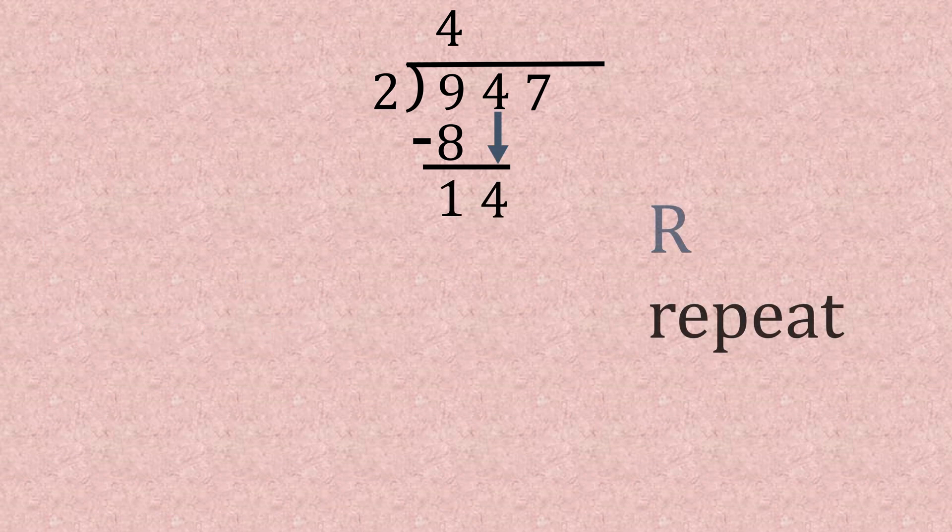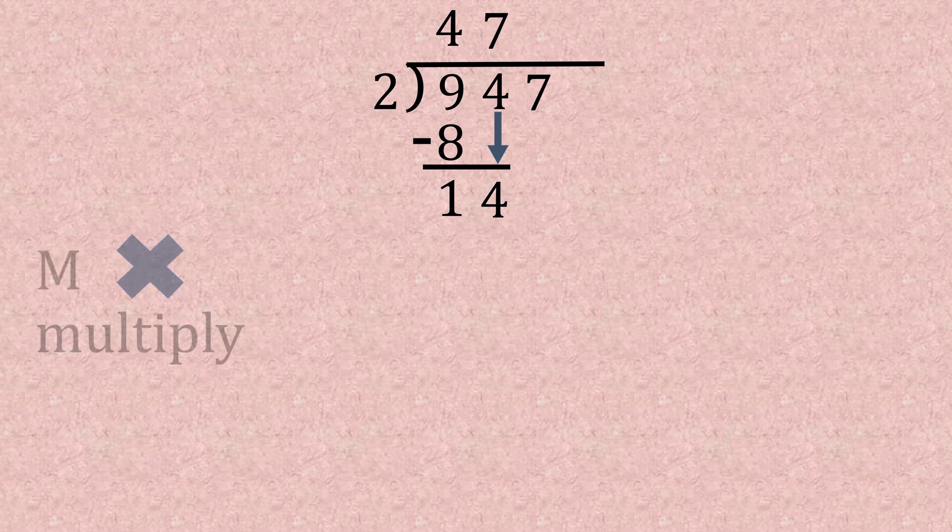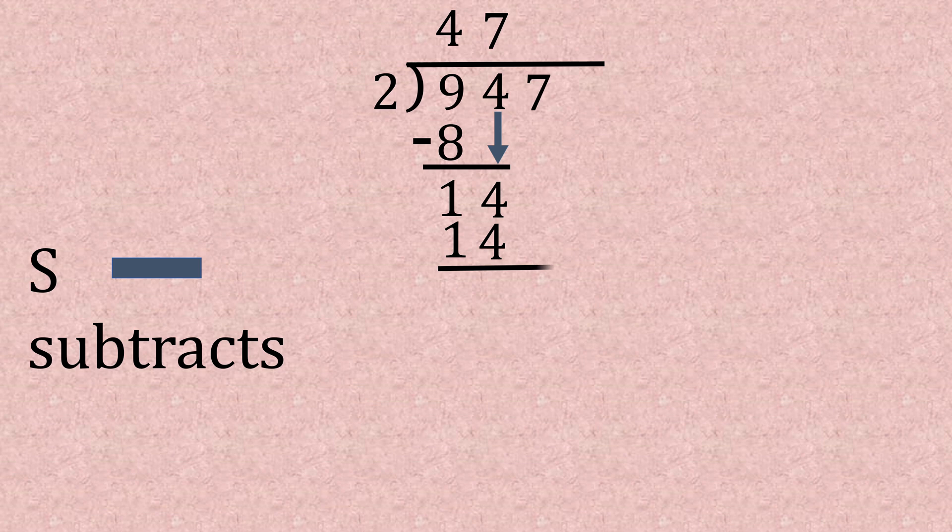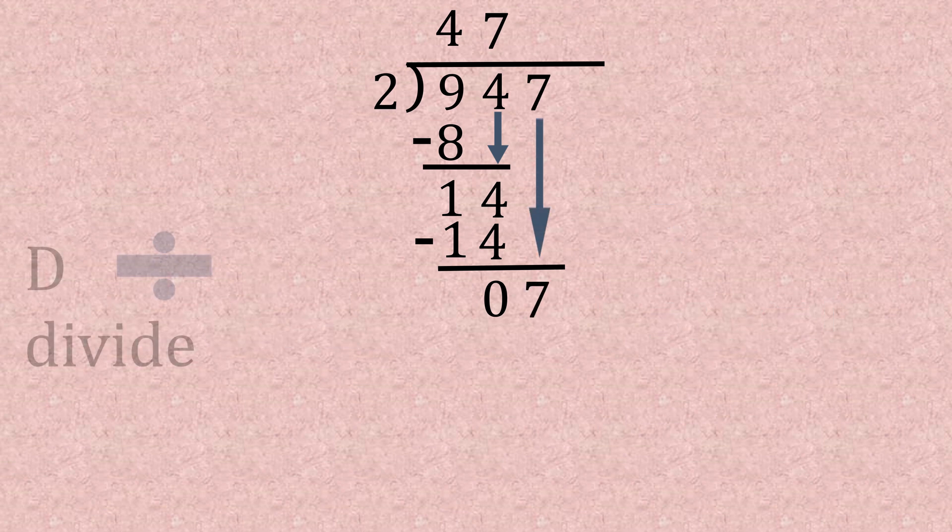Repeat, start from the beginning. 14 divided by 2, well that's 7. Then we multiply, 7 by 2, giving us 14. Yes, you know subtract is next, which leaves us with 0. So we've got to B, bring down, so that leaves us with 7. And now we repeat the process back to the beginning.